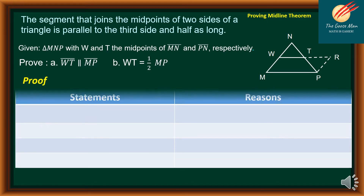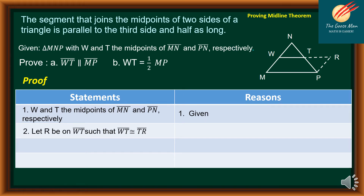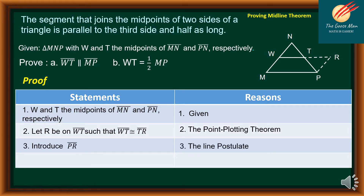For our proof, we will use the two-column form with statement and reason. Statement 1: W and T are the midpoints of MN and PN respectively — this is given. Statement 2: Let R be on WT such that WT is congruent to TR — that is the point plotting theorem. Statement 3: introduce PR — the line postulate. Statement 4: NW is congruent to MW and NT is congruent to PT — definition of midpoint.